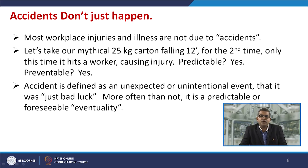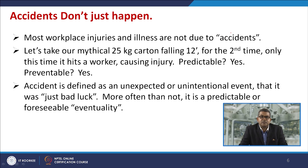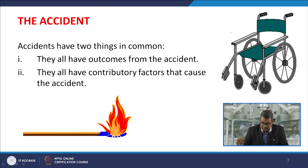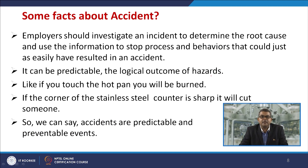Usually accidents do not just happen. Most workplace injuries and illnesses are not simply due to accident. Taking our example of the 25-kilogram carton falling from 12 feet again — this time it hits the worker, causing injury. Was it predictable? Yes. Was it preventable? Yes, because you knew about the hazard beforehand. So accidents are defined as unexpected, unintentional events — just bad luck — but more often than not they are predictable or foreseeable. Accidents have two things in common: they all have an outcome, and they all have a contributory factor that caused the accident.